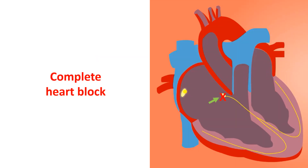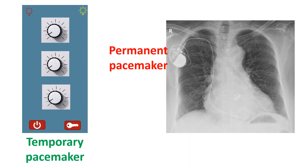When the AV node is diseased, the conduction of signals from the SA node to the lower chambers of the heart becomes defective. If conduction is totally blocked, it is known as complete heart block. The heart rate becomes dangerously slow when there is complete heart block, and an artificial pacemaker is needed.